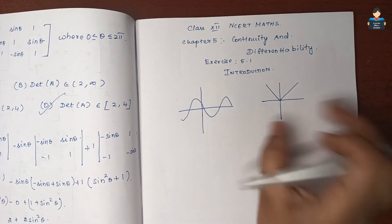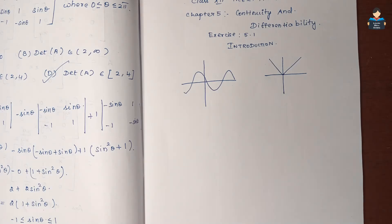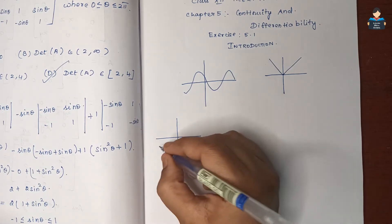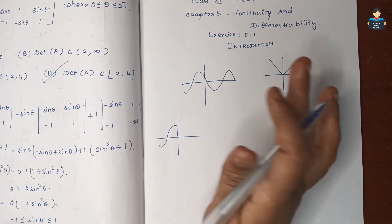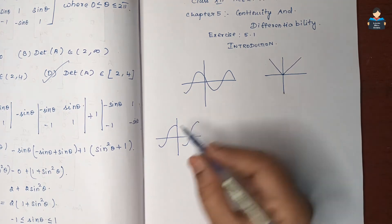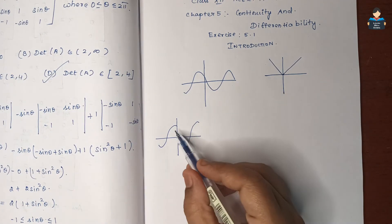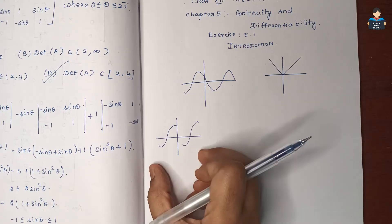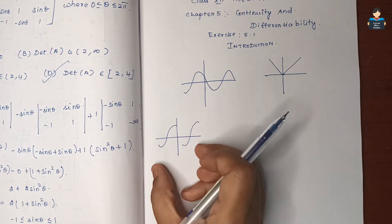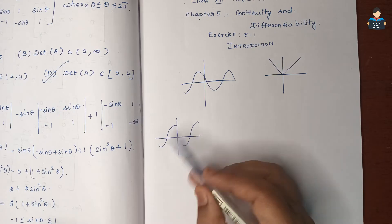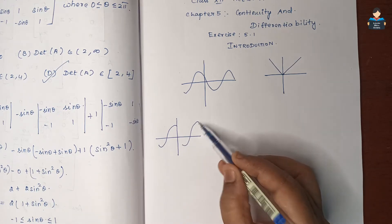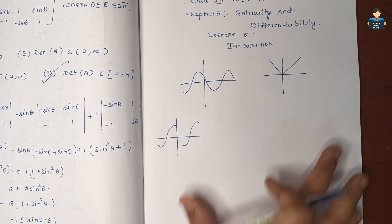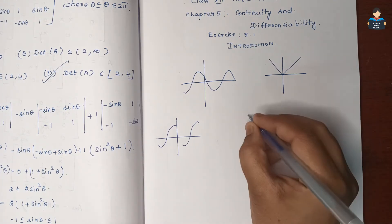If it is not drawn in one stroke, then it is said to be not continuous. Another example: this is a curve that is not continuous — this is an example of discontinuity.